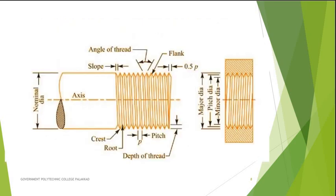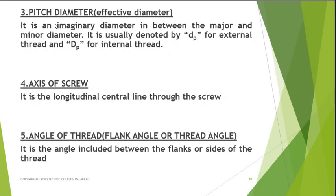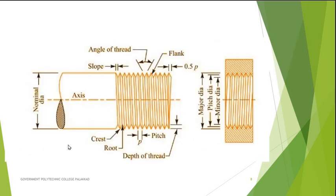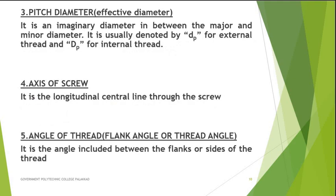Pitch diameter is an imaginary diameter in between the major and minor diameter. It is usually denoted by small letter dp for external thread and capital Dp for internal thread. It is also known as effective diameter. The next point is the axis of screw, which is the longitudinal center line through the screw.